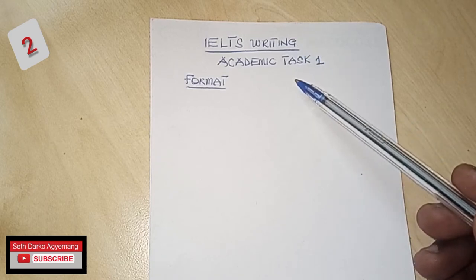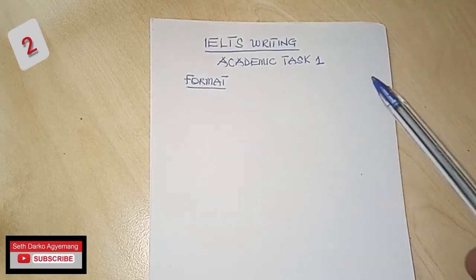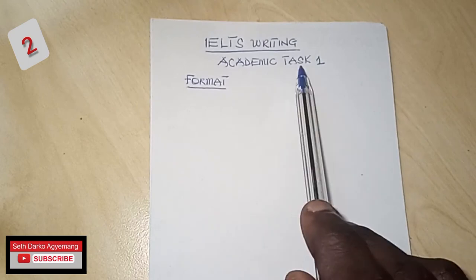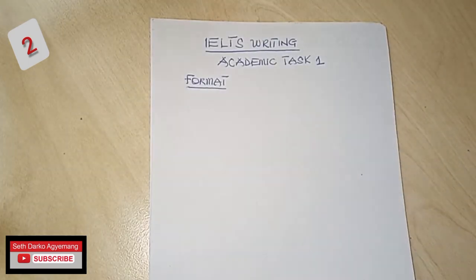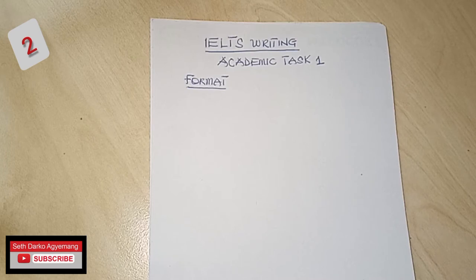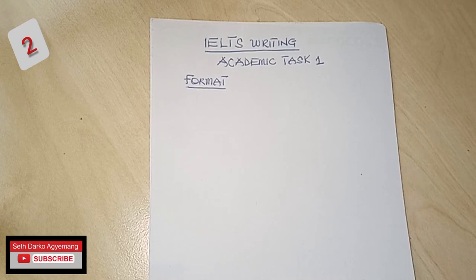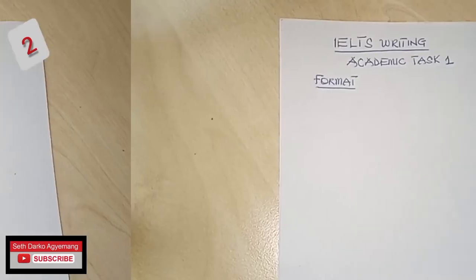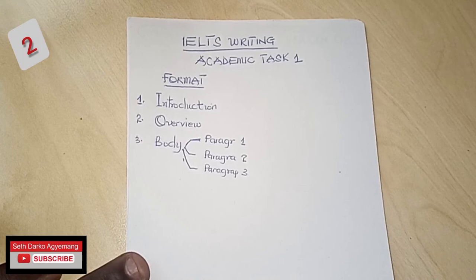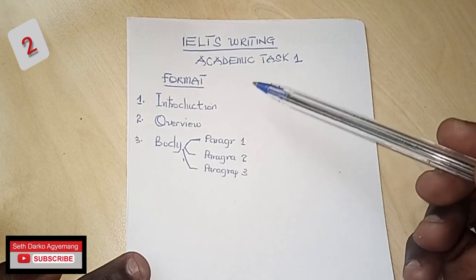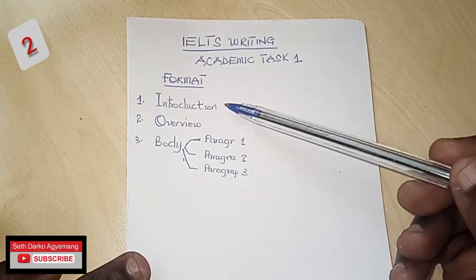Nurses sit for the IELTS Academic, which is why in Task 1 you'll be describing diagrams. When you get the Task 1 paper in front of you, you'll see a line graph, bar chart, pie chart, map, process, or a combination — it's likely you'll get one of these to report on. The format I'm going to show you applies to all of them. The first thing is to get your introduction ready, and the introduction can be taken from the question itself.